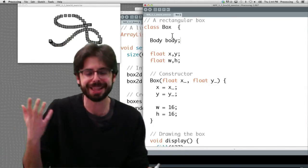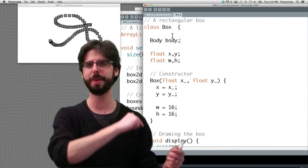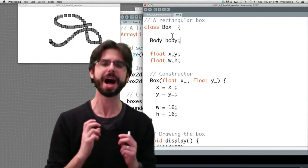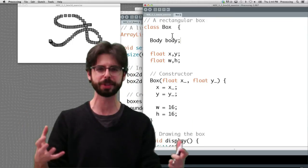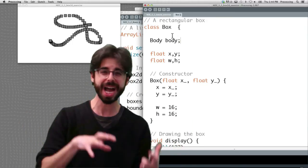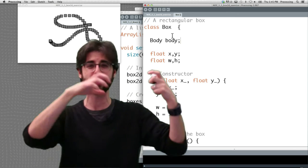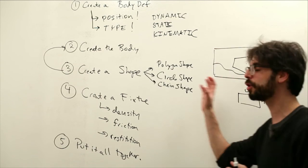So you would think that that would just be body equals new body xy. Boom, I'm done. And it's just not that simple. Box2D requires a lot of steps to set up all the initial parameters about the body. Where is it? What kind is it? What's the shape? How's that shape attached? What are the physics parameters? And these are those steps. So these are those steps.